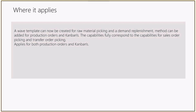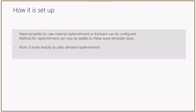To summarize where it applies: a wave template can now be created for raw material picking with demand replenishment. The method can be added for both production orders and kanbans. The capabilities fully correspond to those for sales order picking and transfer order picking. The setup is exactly the same as demand replenishment for a sales order wave template — you add the replenishment method and use it the same way, relating to location directives and work templates.